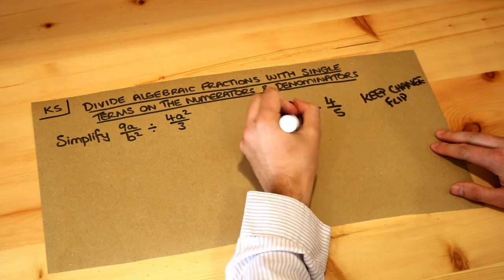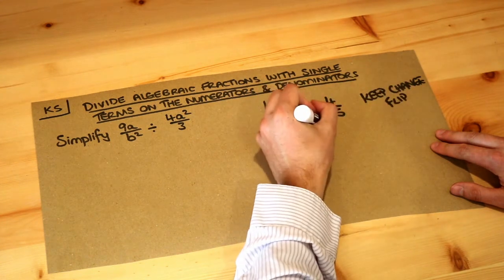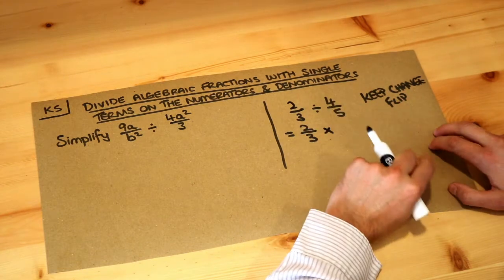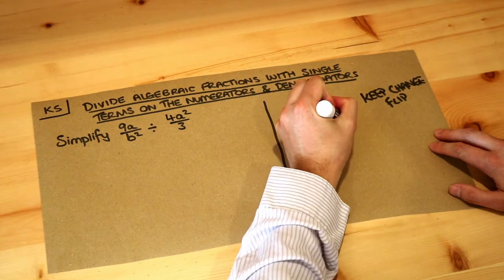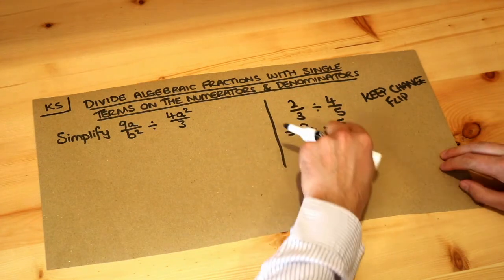We keep the first fraction as it is, we change the divide into a times, and we flip the second fraction, otherwise known as reciprocating. To reciprocate a fraction means to do one over it, which then flips the fraction over.